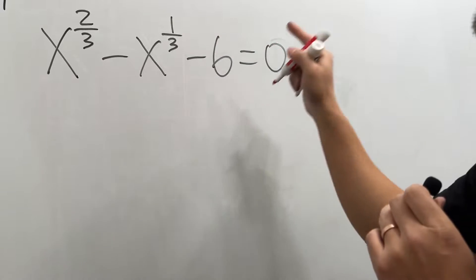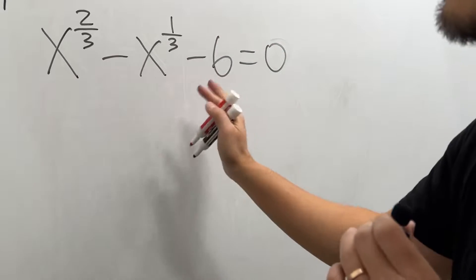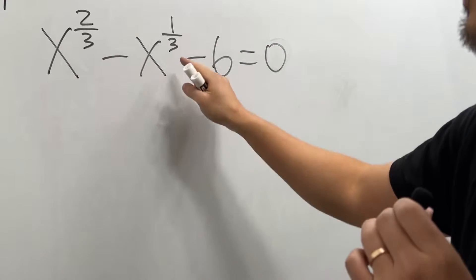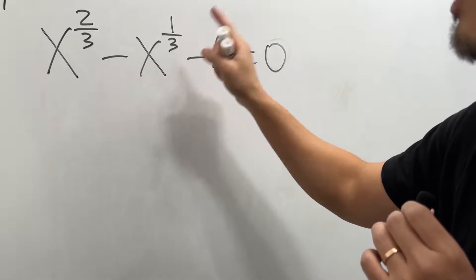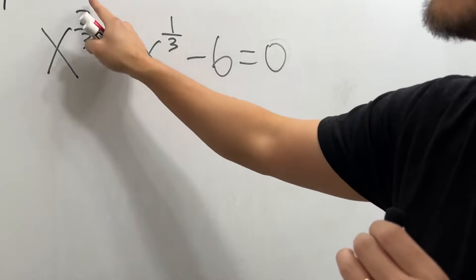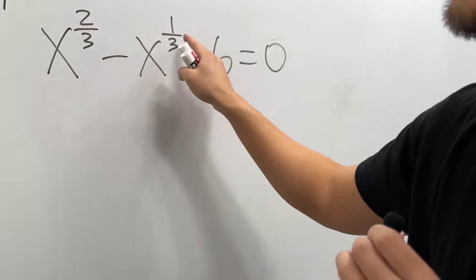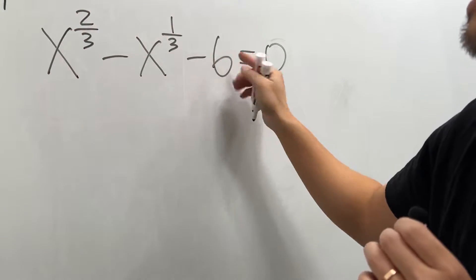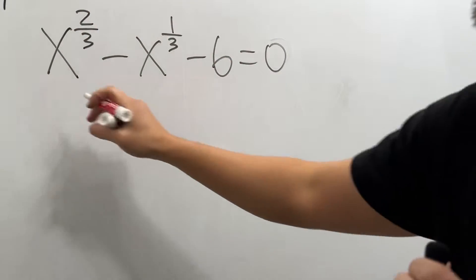This equation looks very hard, but it's actually really easy because it's a quadratic equation in terms of x to the one-third power. Why? Because this power is twice of that, and this right here has no x.